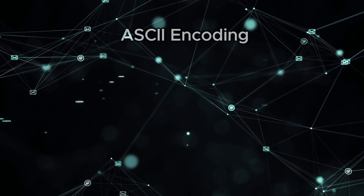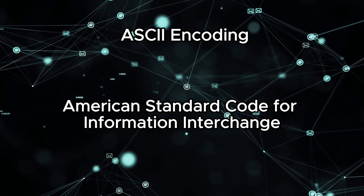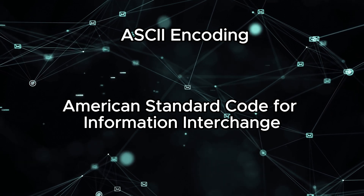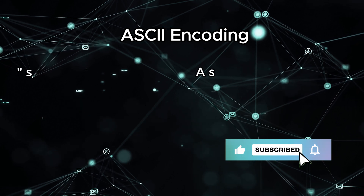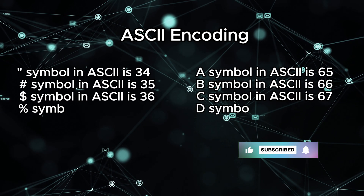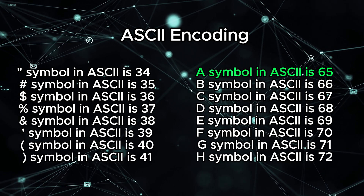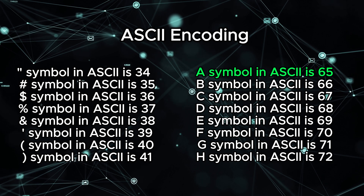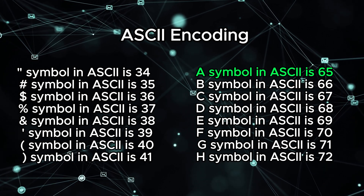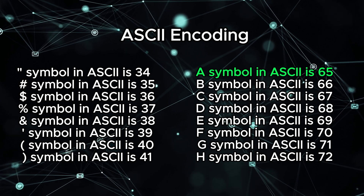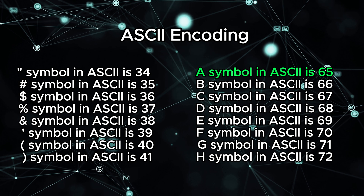Now let's talk about ASCII. It stands for American Standard Code for Information Interchange. It's like a universal translator for computers, assigning specific numbers to every character you can think of — letters, numbers, punctuation, you name it. For example, the letter A is represented by the number 65 in ASCII. ASCII encoding ensures that no matter what kind of computer or device is involved, they can all understand and agree on the same set of numbers for characters.